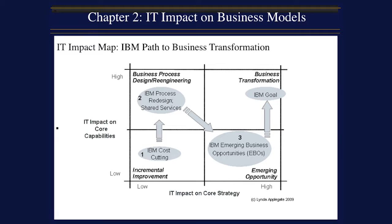IT impact on strategy also identifies the impact of IT on defining the growth path of the company over time. IT impact on capability defines the role that IT plays in building the capabilities needed to execute strategy. These capabilities include processes and infrastructure, people and partners, organization and culture, and leadership and governance.